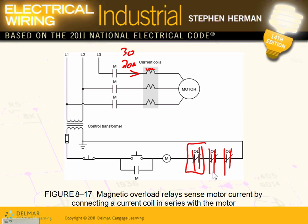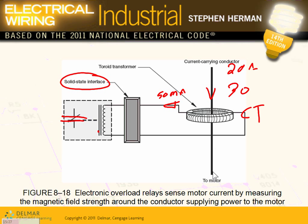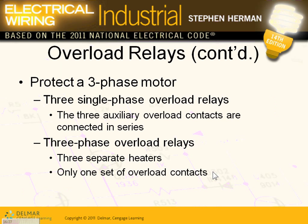Any question about the magnetic and electronic overload? The electronic overload uses CTs — current transformers — that take 30 amps and change it into, say, 50 milliamps or 0.5 amps.